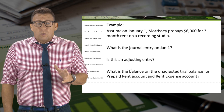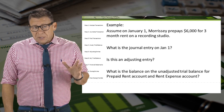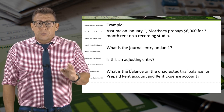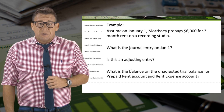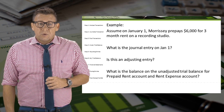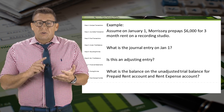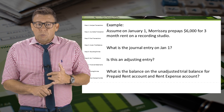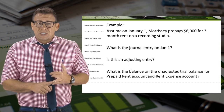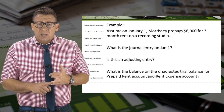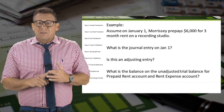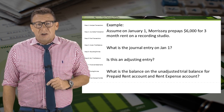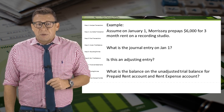Assume on January 1, Morrissey prepays $6,000 for three months' rent on a recording studio. What's the journal entry on January 1? Is this an adjusting entry? And what is the balance on the unadjusted trial balance for our prepaid rent account and our rent expense account?